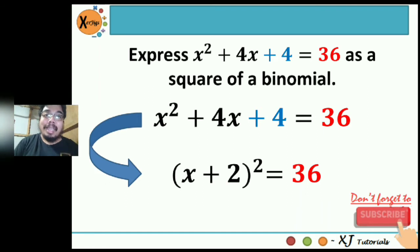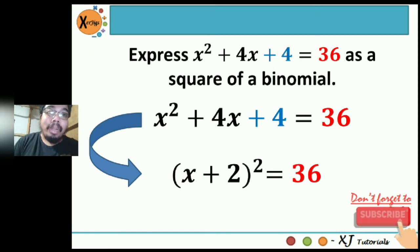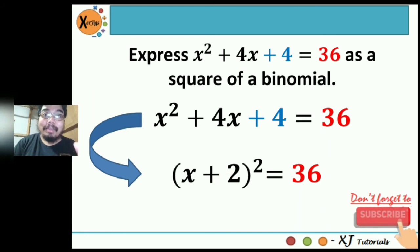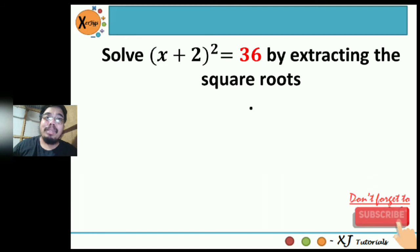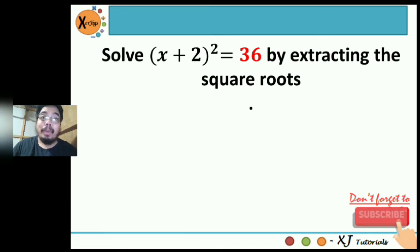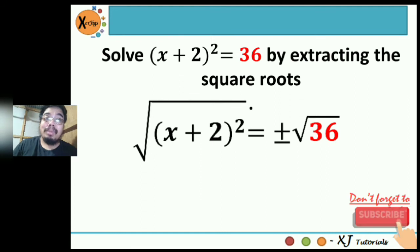To get the binomial, the technique is: take the square root of the quadratic term and the square root of the constant term. The square root of x squared is x, and the square root of 4 is 2. Follow the sign of the linear term — since it's positive, the sign is positive. So the next step is to solve quantity x plus 2 squared equals 36 by extracting the square roots, applying the square root property: the square root of quantity x plus 2 squared equals positive and negative square root of 36.